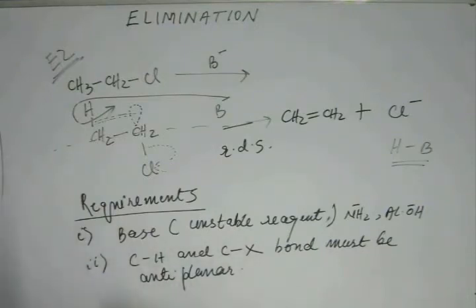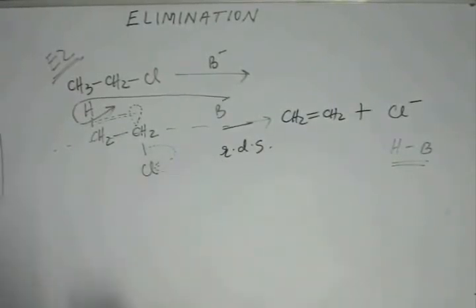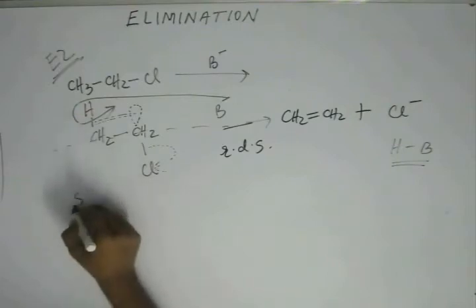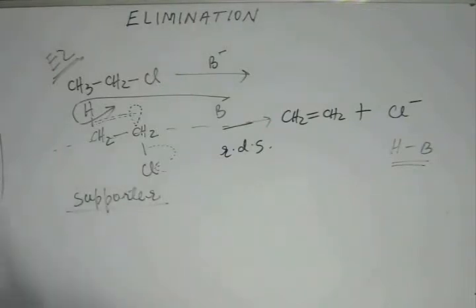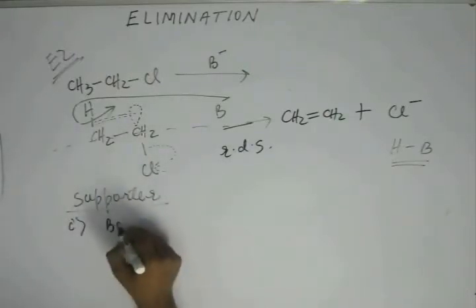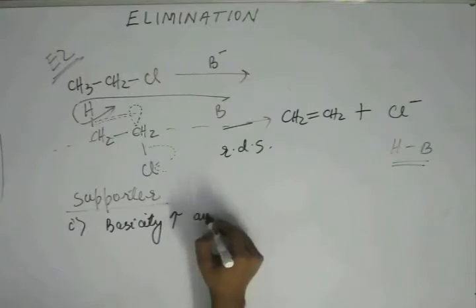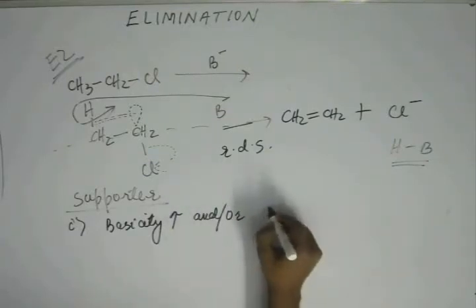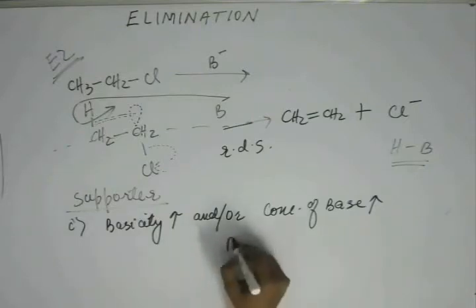That means concentration of base and basicity is not going to alter E1, but it is going to enhance E2. This will be one of the factors by which we can moderate or prioritize E1 over E2 or E2 over E1. There will be two factors supporting E2, and one of them is basicity. So looking at factors which are supporters of E2: number one is base — meaning both basicity and concentration.